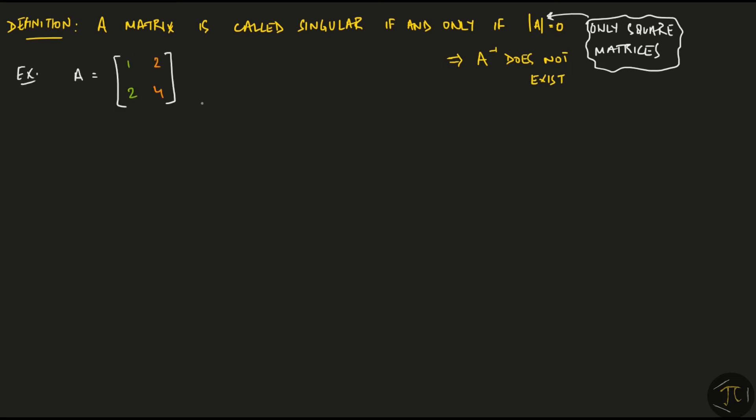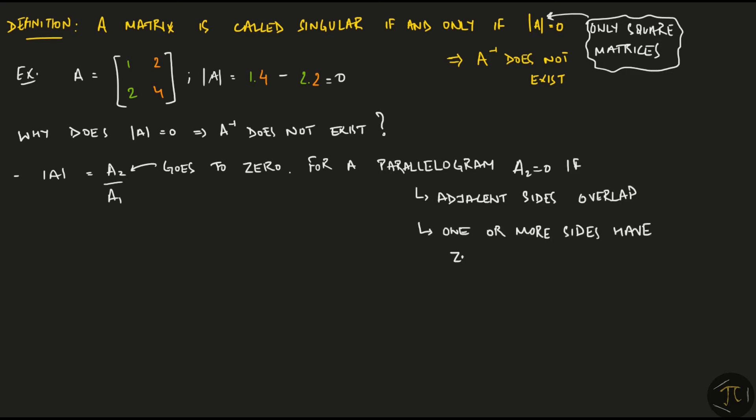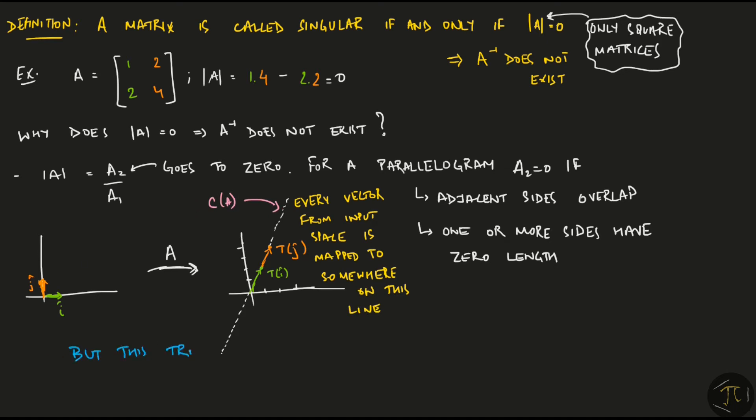I'll show it to you with an example. The determinant of this matrix turns out to be 0. But why does this imply that the inverse won't exist? Remember that the determinant can be thought of as the ratio of two areas or volumes. If it's 0, it means the numerator goes to 0. In 2D space, for a parallelogram, area is 0 if either the adjacent sides overlap or one or more sides have 0 length. If I show the transformation of this matrix A, you can see that the vectors i-hat lands at 1,2 and the vector j-hat lands at 2,4. Both of them are on the same line. They don't really form a parallelogram anymore. The adjacent sides are overlapping and so the area goes to 0. Every vector from the input space is mapped to somewhere on this line. This line is the column space of A. So this transformation is not surjective and this means that the inverse does not exist for this matrix.